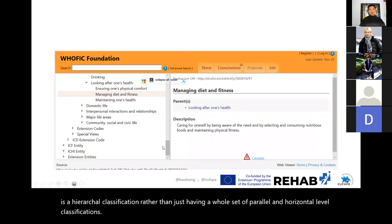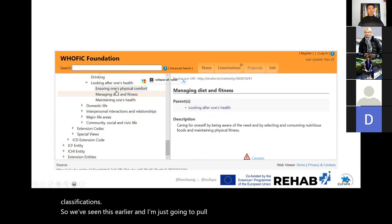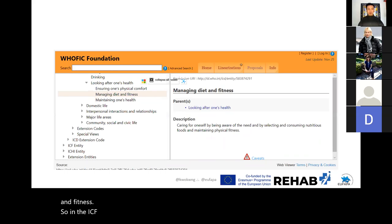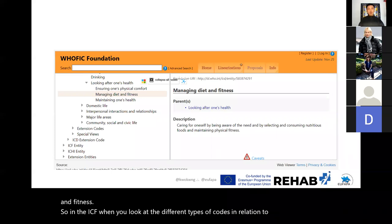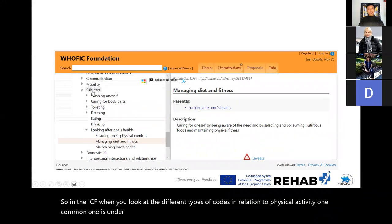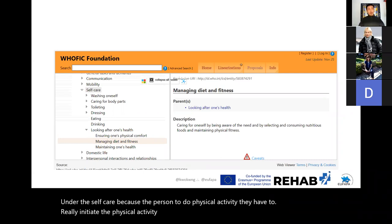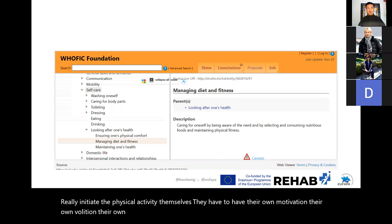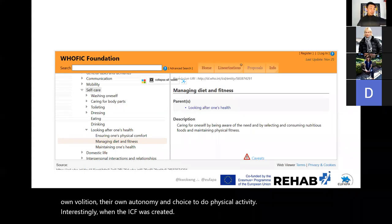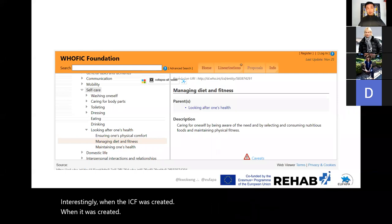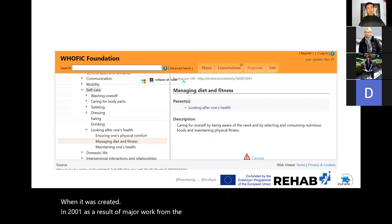In the ICF, when you look at the different types of codes in relation to physical activity, one common one is under self-care, because for a person to do physical activity they have to initiate it themselves — they need their own motivation, volition, autonomy, and choice. Interestingly, when the ICF was created in 2001 as a result of major work from the previous classification, they combined the classification of managing diet and fitness together.